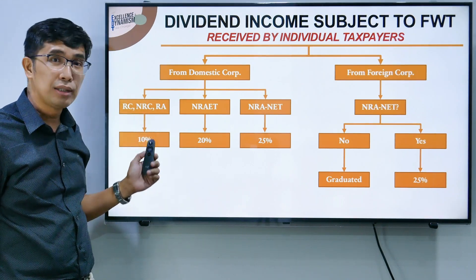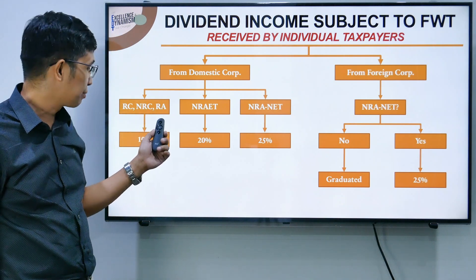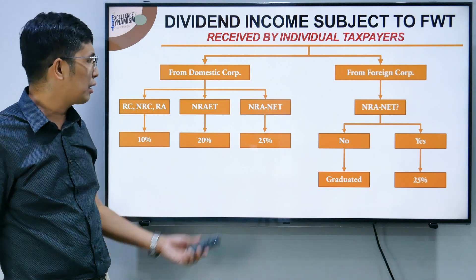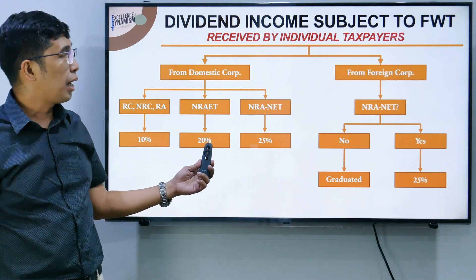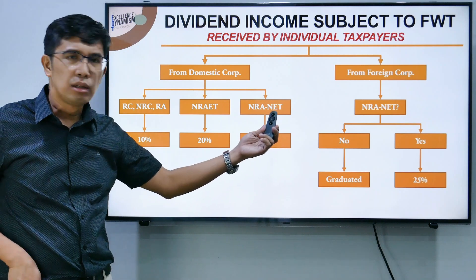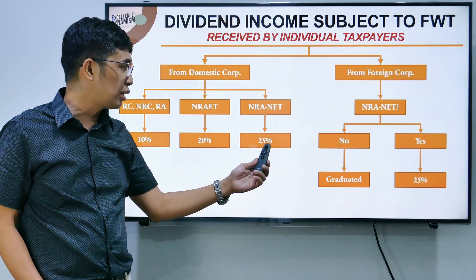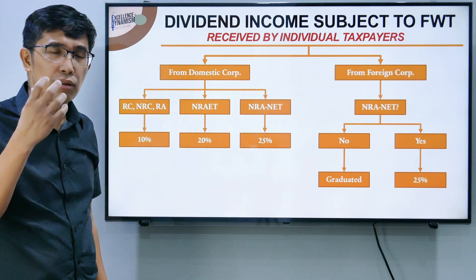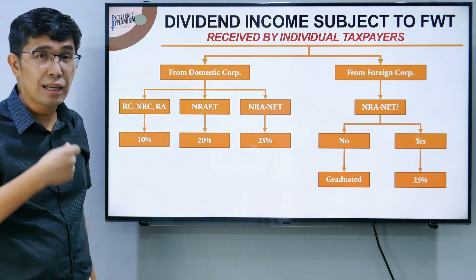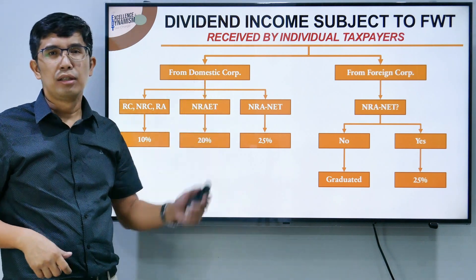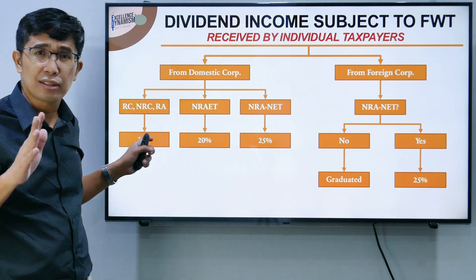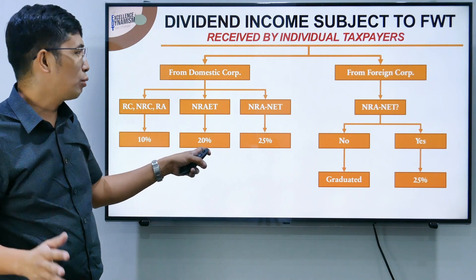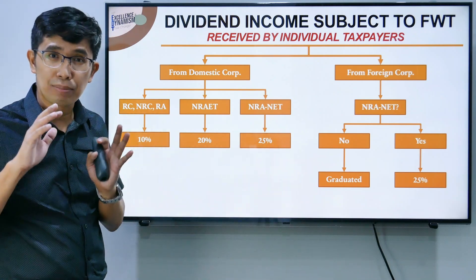The FWT rate is generally 10% — if the receiving individual is a resident citizen, non-resident citizen, or resident alien. If the individual is a non-resident alien engaged in trade (NRA-ETB), the rate is 20% FWT. If the individual is a non-resident alien not engaged in trade (NRA-NETB), the rate is 25% FWT. So: if silent, 10%; NRA engaged, 20%; NRA not engaged, 25%.